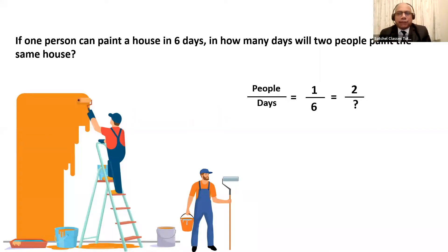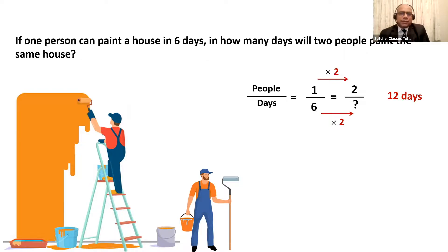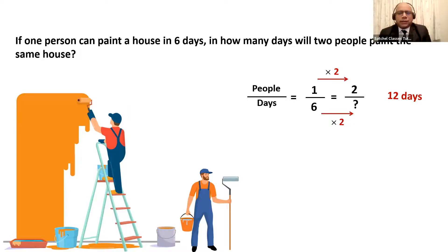Let's use the method of scale factor to get the unknown value. The numerator has been multiplied by 2 — 1 times 2 is 2 — so the denominator has to be multiplied by 2. 6 times 2 is 12, so the answer is 12 days. But something looks astray — how can it be 12 days? If one person can paint this wall in 6 days, how can two people paint it in 12 days?